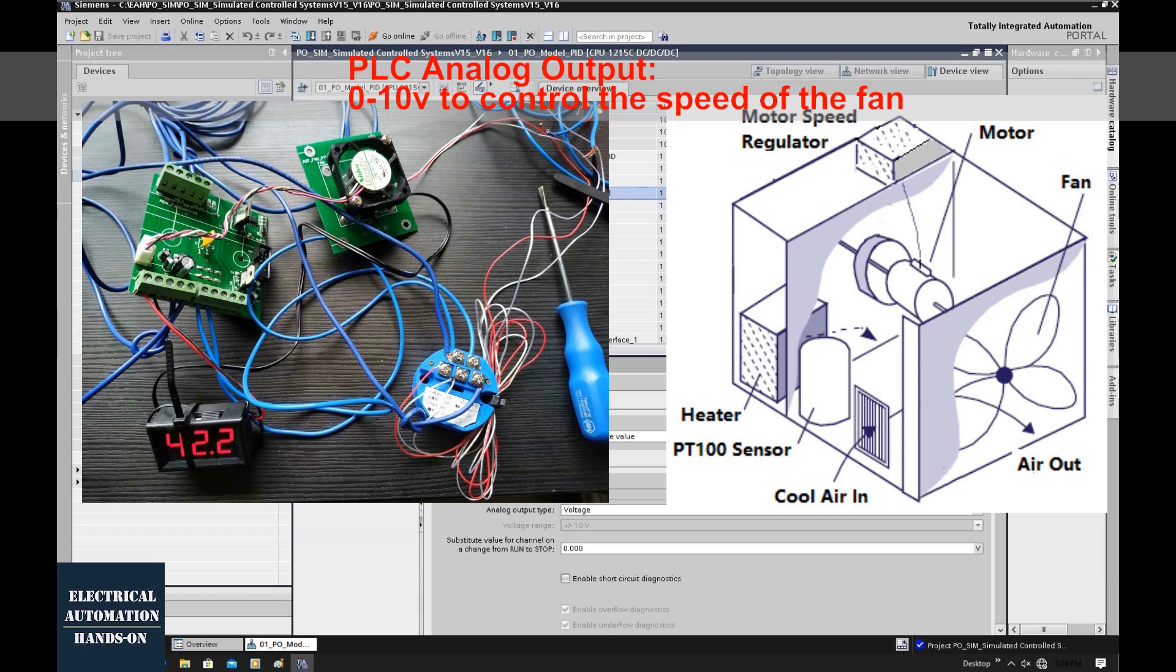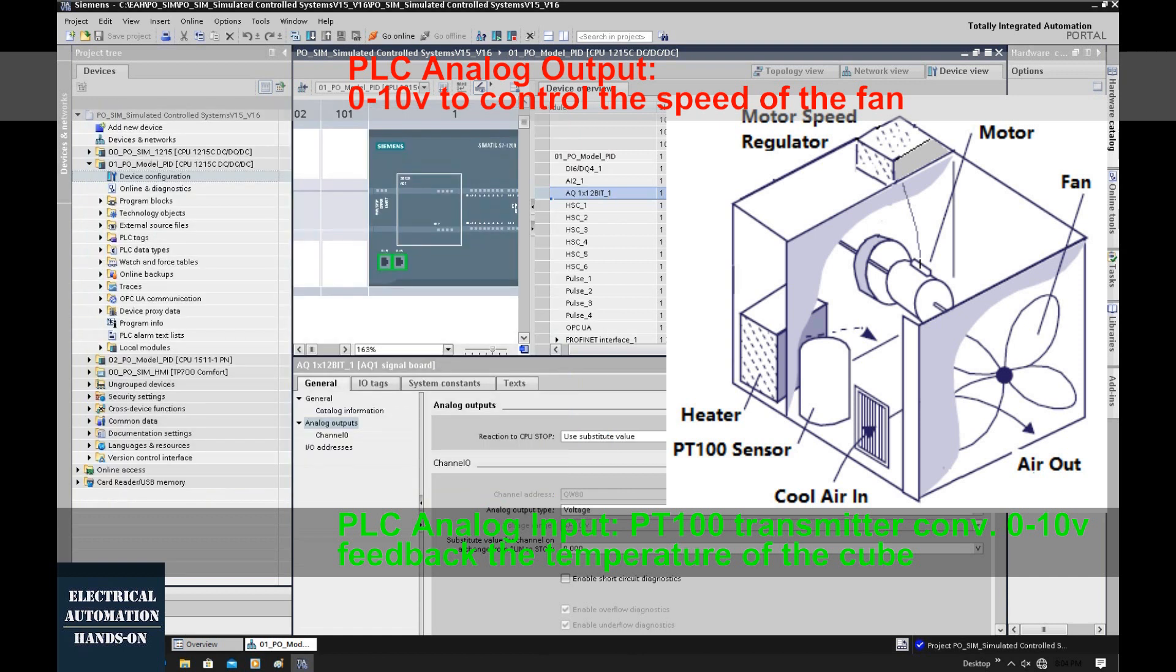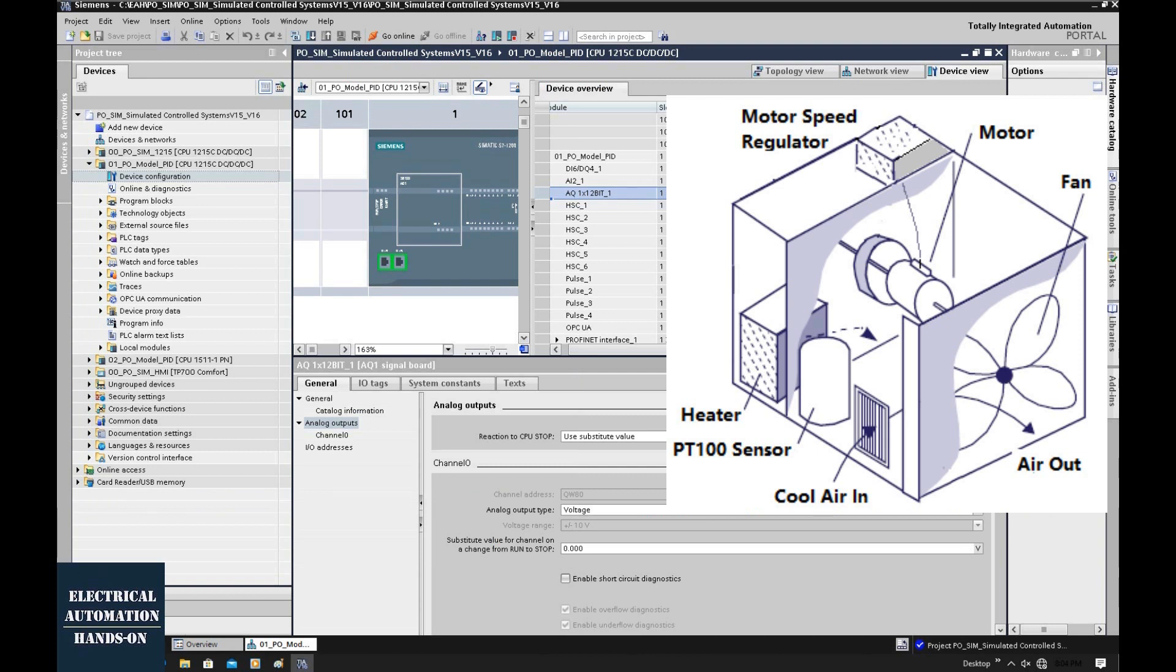To measure temperature, I'm using a PT100 RTD sensor connected to a transmitter. This transmitter converts the signal to 0 to 10 volts, and I use the analog input to measure the temperature. That's my whole control system and process object.